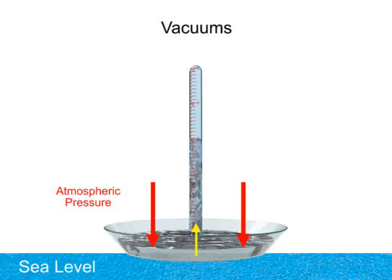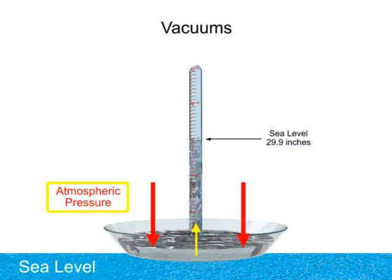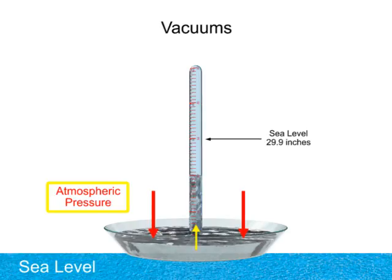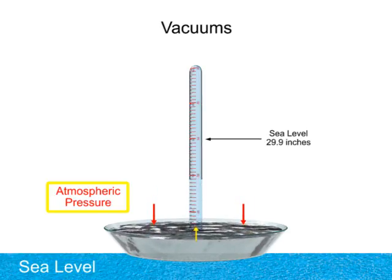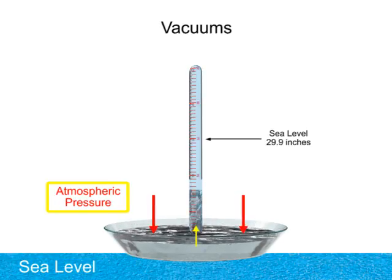With this method, the empty space at the top of the tube forms a perfect vacuum. At sea level, the elevation of mercury will stand at about 29.9 inches of mercury. As the atmospheric pressure decreases, the height of the mercury in the tube decreases. As the atmospheric pressure increases, the height of the mercury in the tube increases.